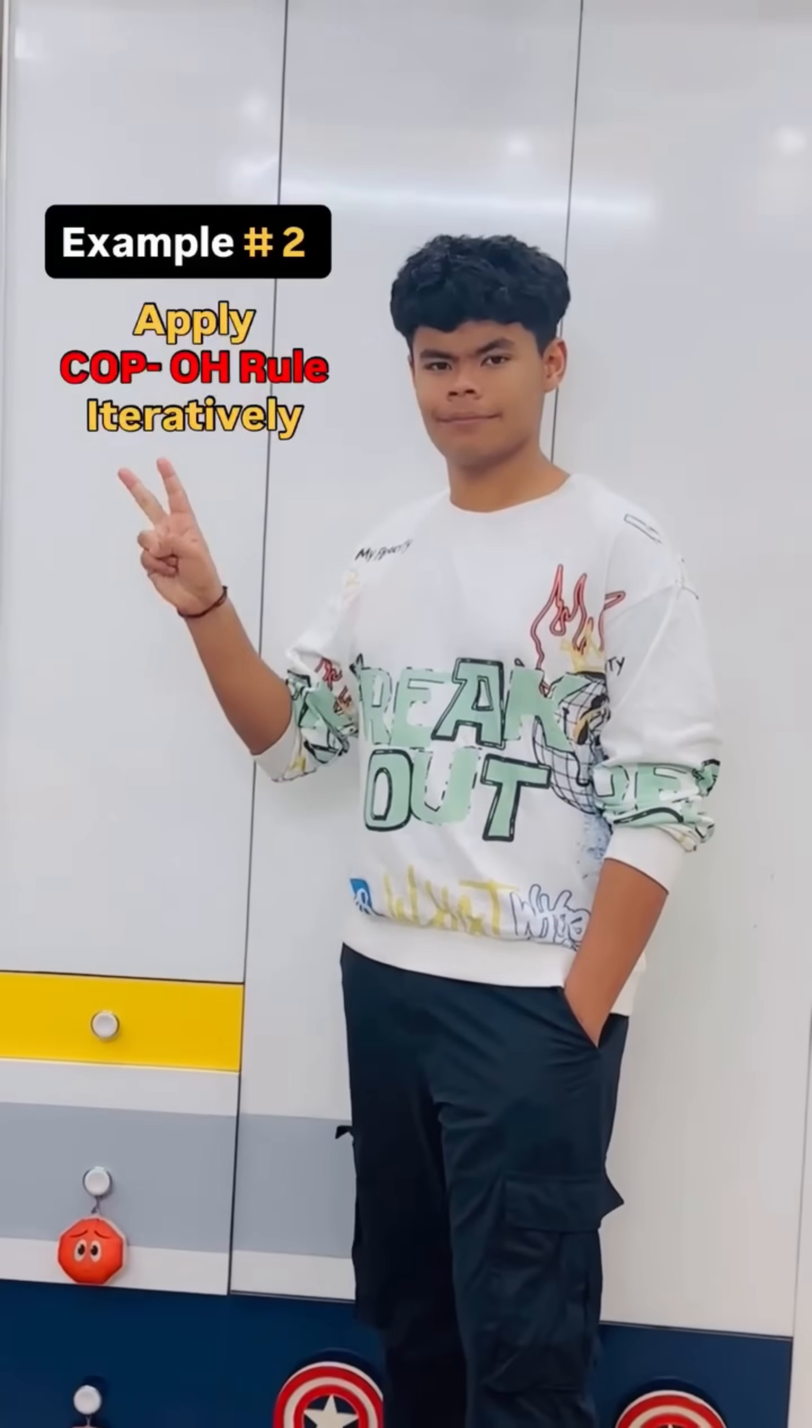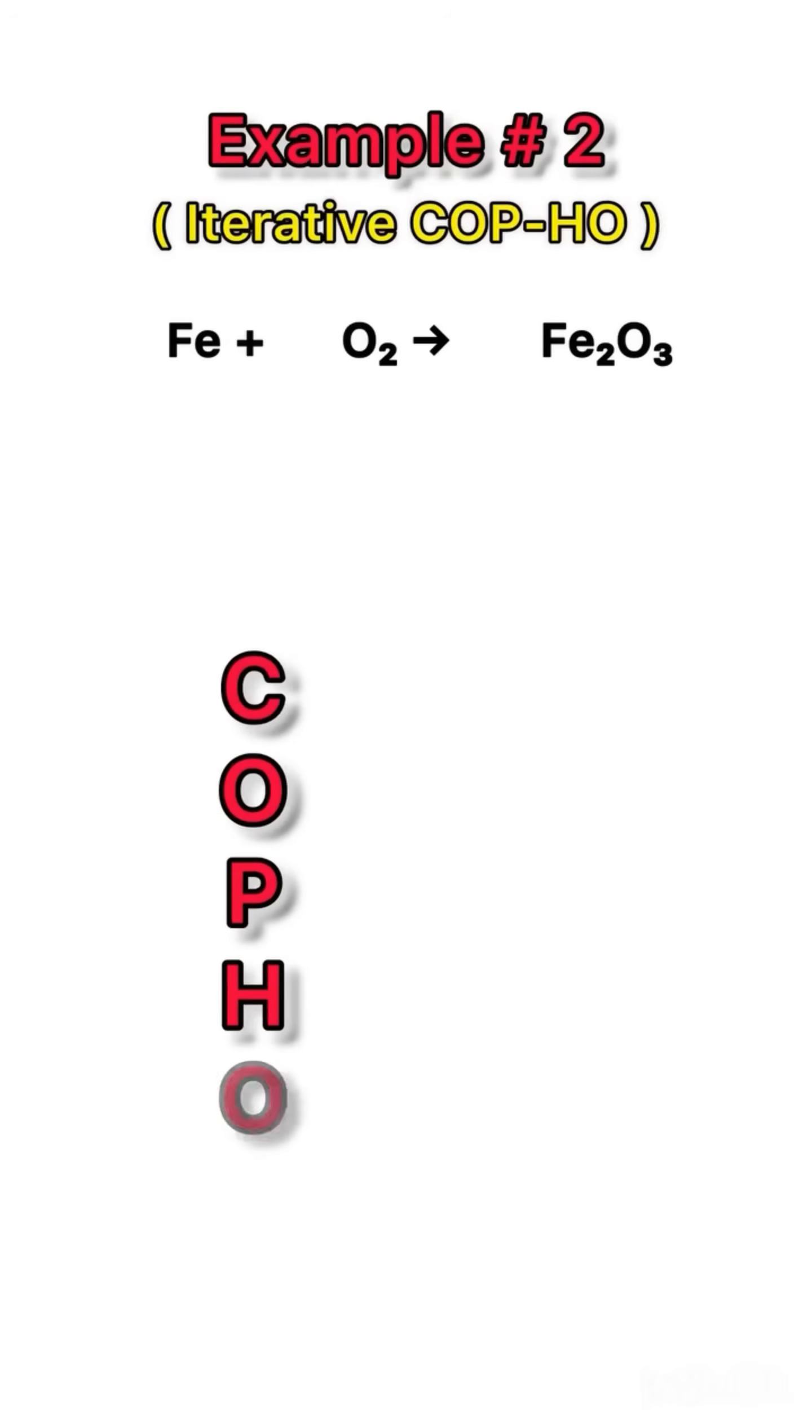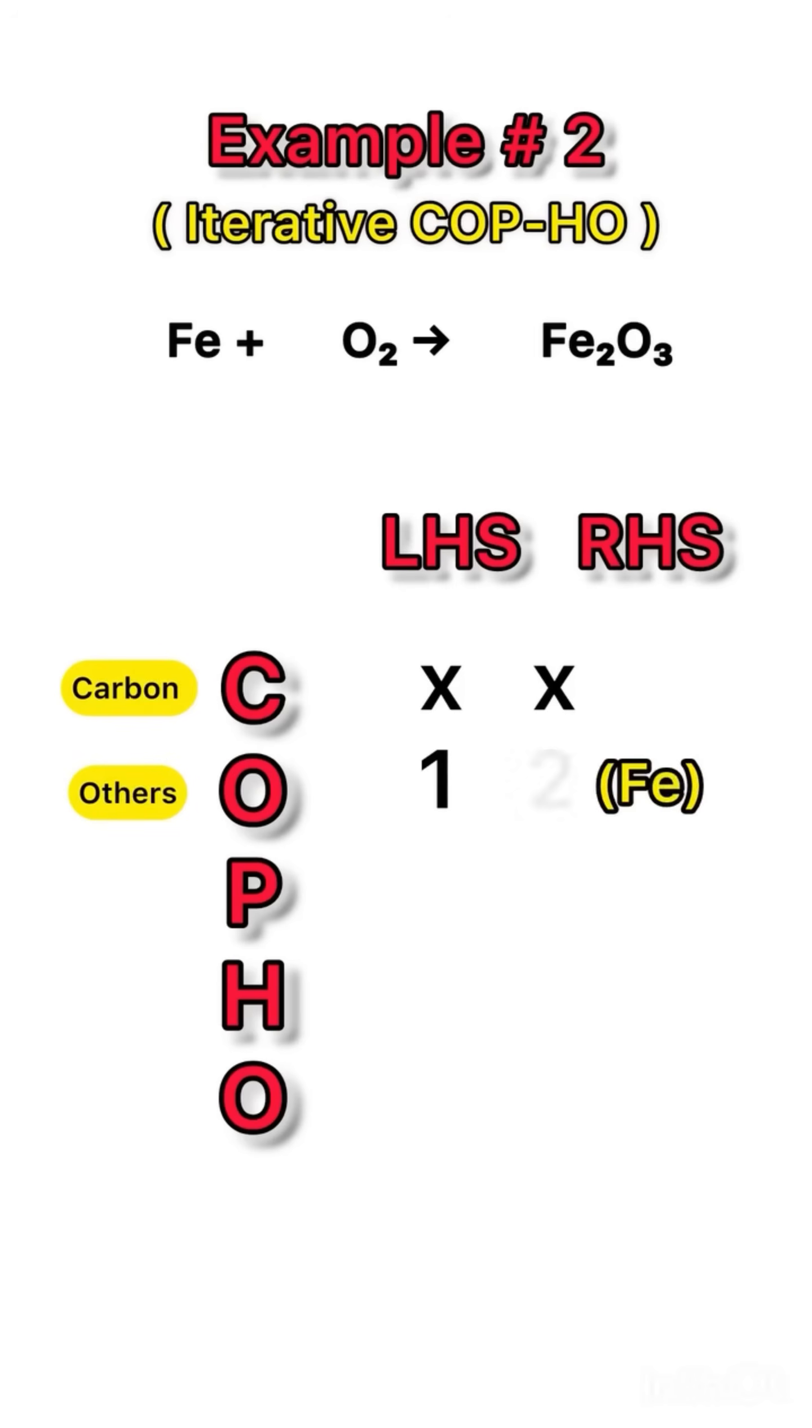Now the iterative example, where balancing one element disturbs the other, so we have to repeat COP-HO. Carbon not present, so cross. In other elements we have Fe. Left side it's 1, and on right side in Fe2O3 it is 2, so put 2 before Fe on the left hand side to balance it. Polyatomic is not there, so cross.